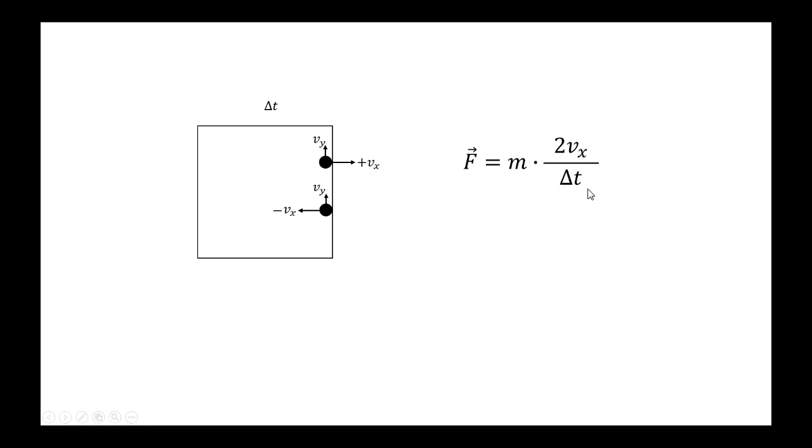Now what about this delta t? What is the time interval exactly? Well, I know speed is distance over time. The length of the box is l, and the speed that I want to take a look at is the speed vx.